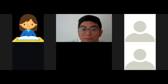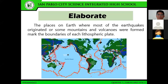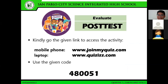Their locations serve as the boundaries of those plates. As mentioned by your classmate, the places on Earth where most earthquakes originate, or where mountains and volcanoes were formed, mark the boundaries of each lithospheric plate. The plate tectonic theory states that the entire lithosphere of the Earth is broken into numerous segments called plates. As plates slowly and constantly move relative to each other, geologic events occur along these boundaries — volcanic eruptions, formation of mountain ranges, and occurrences of earthquakes.